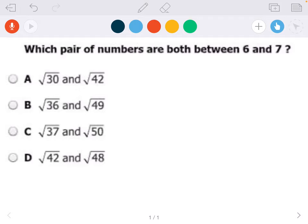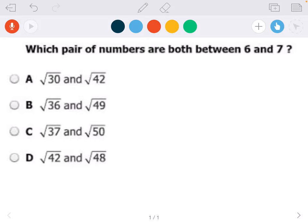So for this one, some of these answer choices are perfect squares, some of them are not. You can use a calculator. If you look at B, the square root of 36 and the square root of 49, those are going to be whole numbers because 36 and 49 are perfect squares. So this one is 6 and 7.